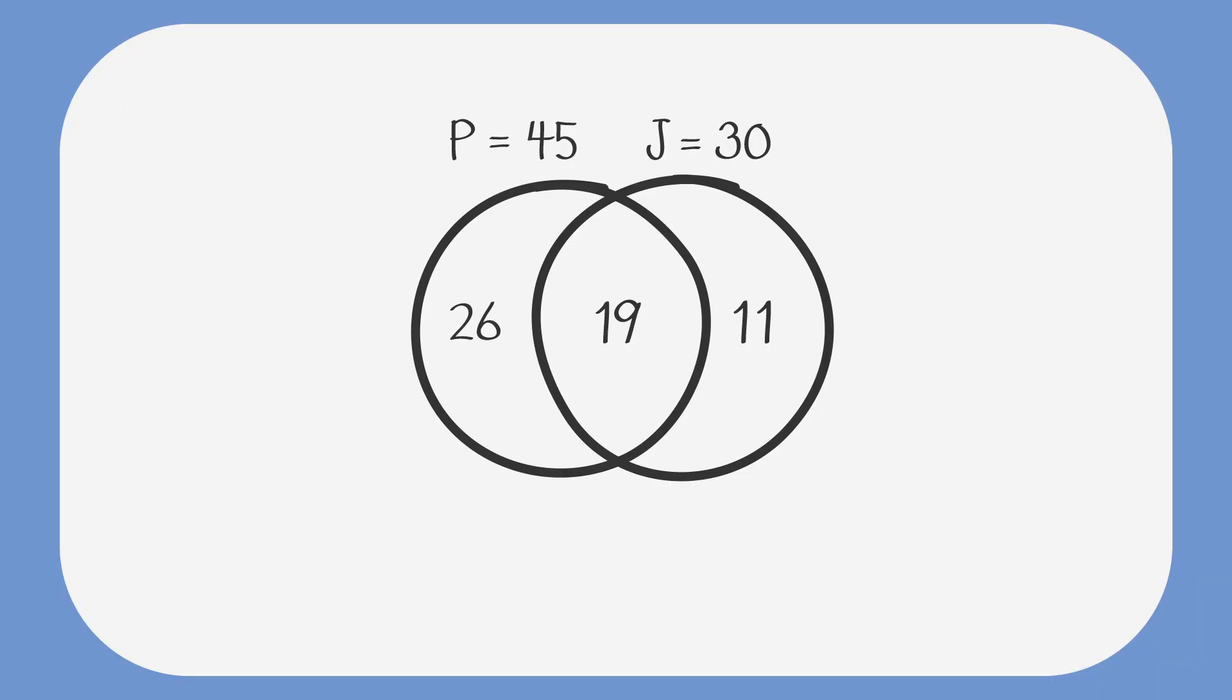Let's imagine there were no other bands at this high school. We'll label the neither outside of the two circles zero. We could find the total students in the band program by adding each portion of the Venn diagram. So, 26 plus 19 plus 11. When we add these together, we get 56. Easy.